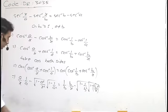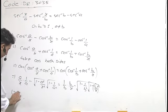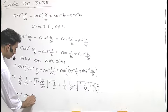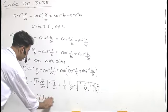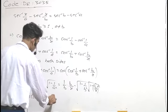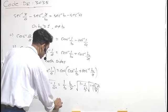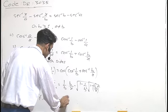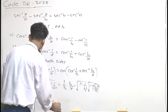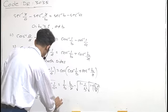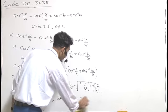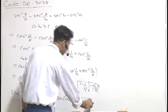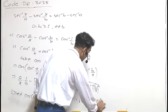Here we have used the identity cos(cos inverse T) equals T, and sin(cos inverse T) equals under root (1 minus T²) for T belonging to the domain.